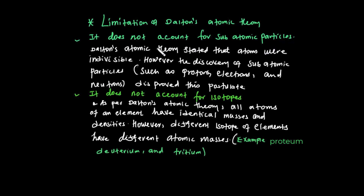Atoms are indivisible according to Dalton. But nowadays, in modern atomic theory, atoms can be divisible because they can be subdivided into electron, proton, and neutron. The Dalton atomic theory also does not account for isotopes — it does not give a separate place for isotopes.